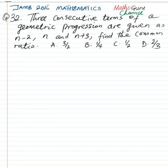Question number 32. Three consecutive terms of a geometric progression are given as n-2, n, and n+3. Find the common ratio.